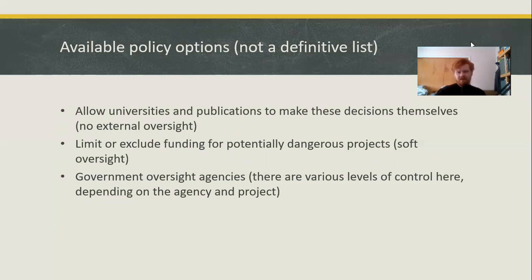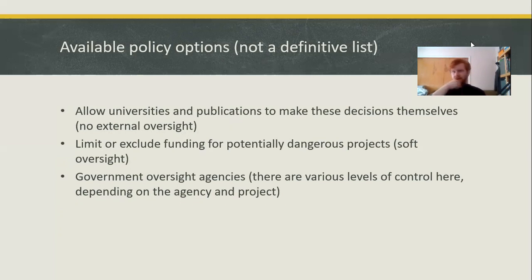We also have government oversight agencies, and there are various levels of control depending on the agency and the project. The ATF — the Bureau of Alcohol, Tobacco, and Firearms — regulates things quite differently than the FDA, the Food and Drug Administration, which regulates things quite differently than the EPA, the Environmental Protection Agency. It depends on who your overseer is and how strict they're going to be, which comes back to politics: who's presently in power and how much do they care to enforce something?